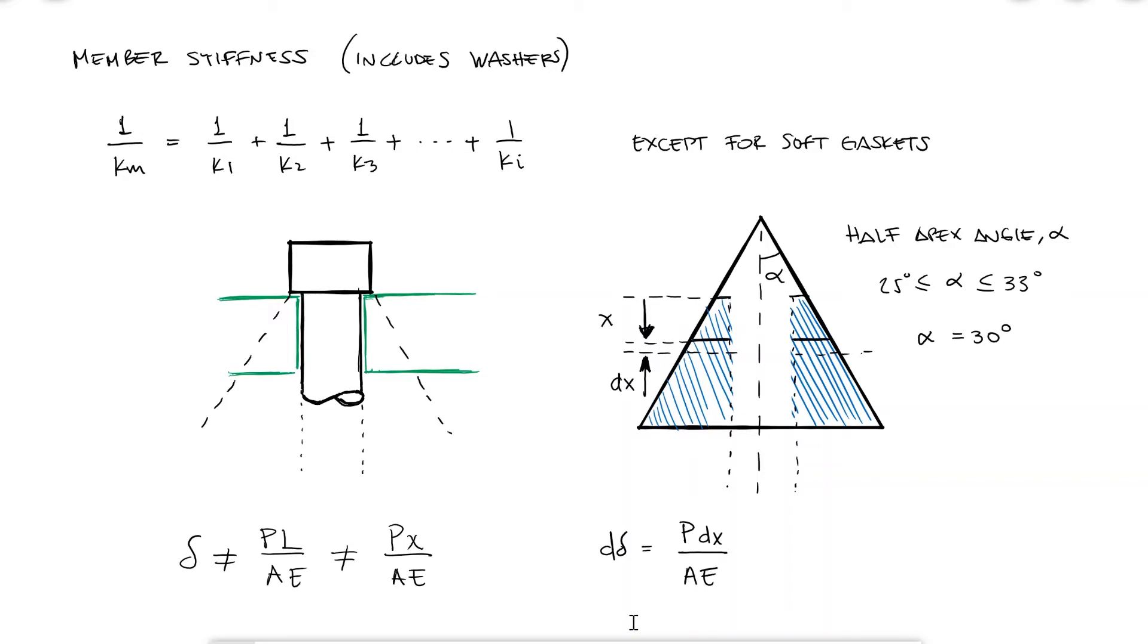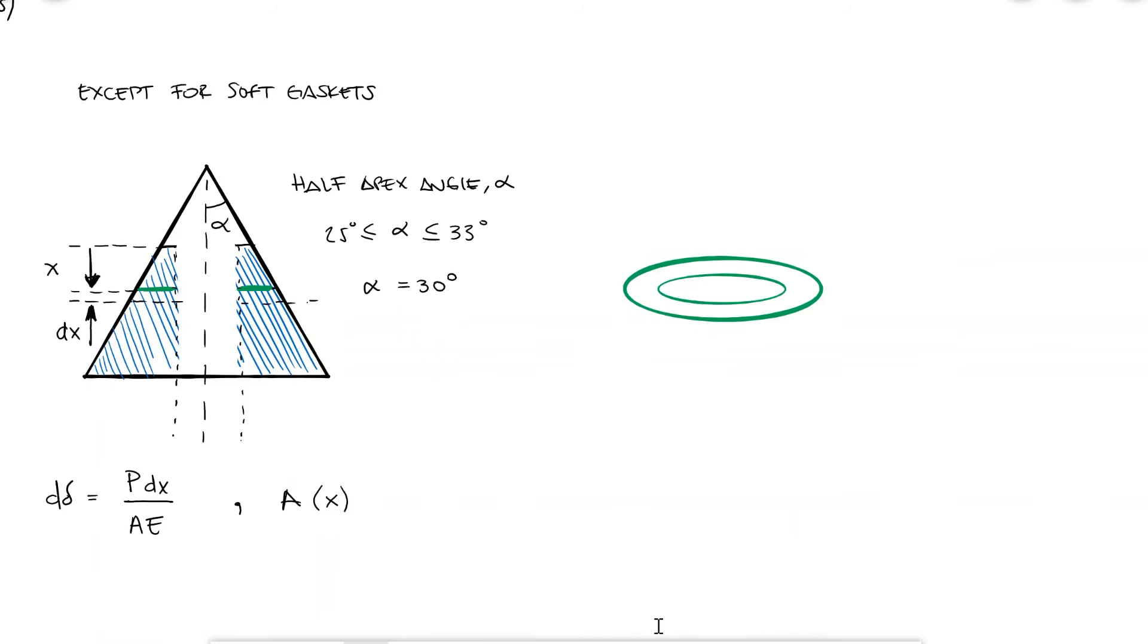However, we can still write d delta as p dx over EA, where A is a function of x. The area at any point x would be the area of a ring where the inner radius is the radius of the hole where the fastener passes through, meaning the bolt major diameter or nominal diameter.